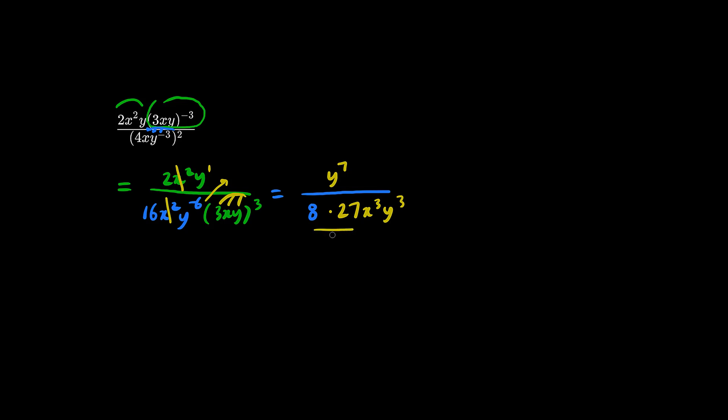And what's 8 times 27? It's 216. And y7 over y3 becomes y to the 4.